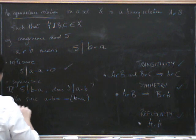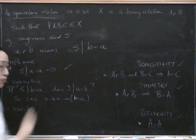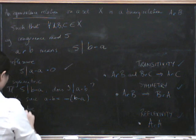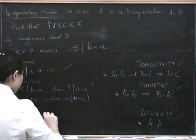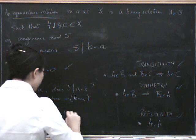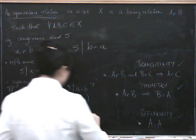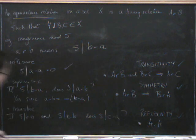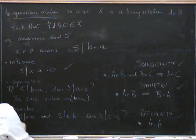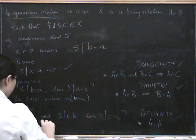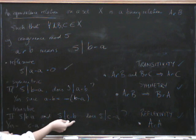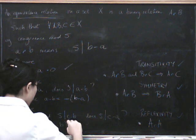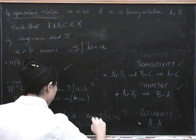And so finally, let's do transitivity. If five divides B minus A, and five divides C minus B, does five divide C minus A? And the answer is yes, because C minus A equals C minus B plus B minus A.